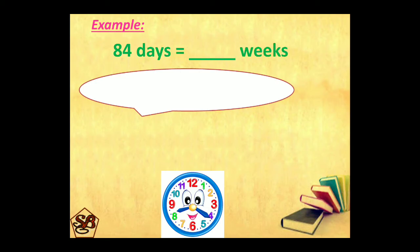84 days into weeks. Now, we are moving from smaller unit to bigger unit. That means we have to divide. And divide by 7. 84 divided by 7 will give us 12. So, 84 days is equal to 12 weeks.